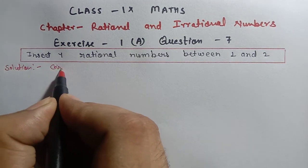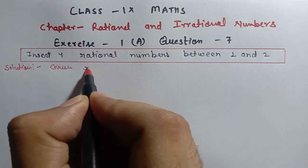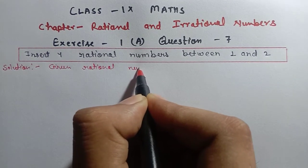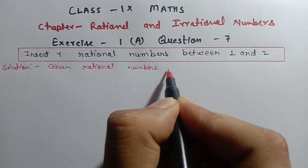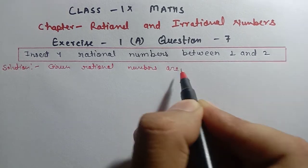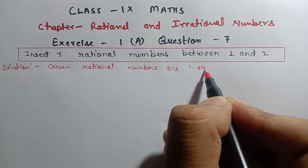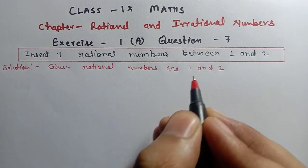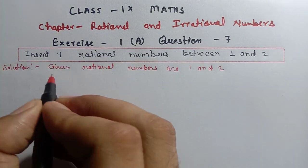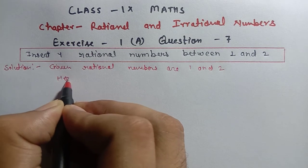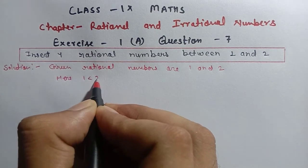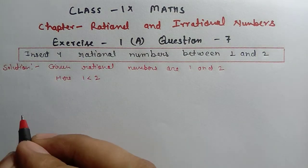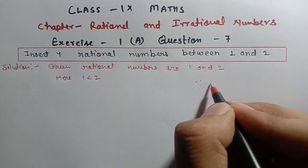So, given: the rational numbers are 1 and 2. First, we will check which is less than and greater than. Here, 1 is less than 2. 1 is less than 2. As I already told you, we use a formula for d.